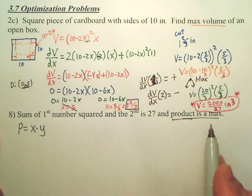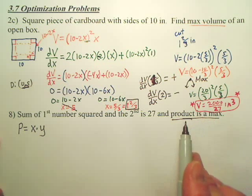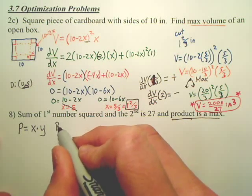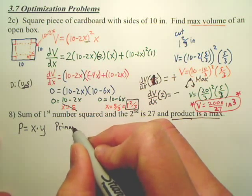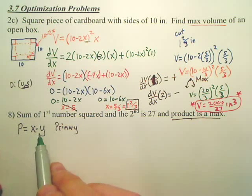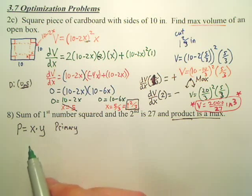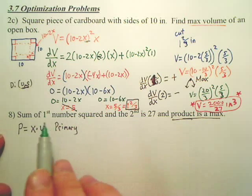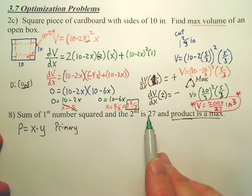Got it? We look at what we're maximizing, that's our primary. Okay, now we need a secondary due to the other information, because from this you have an x and a y. We don't want x and y. We want only x's or only y's. According to this information, we can make a secondary equation.